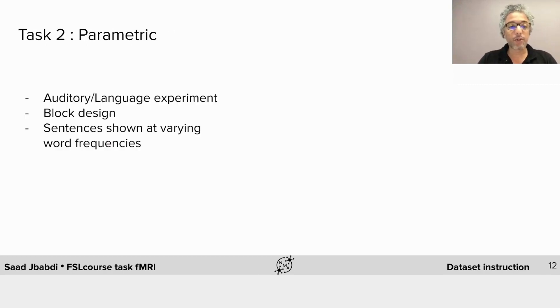The second task is called parametric. This is a combined auditory and language experiment. It is a block design with about 20 seconds per block. In each block the subject is shown a sentence which is presented word per word at a frequency that varies between blocks.